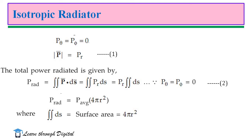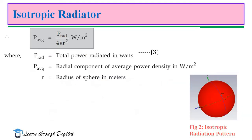That means P-theta and P-phi are zero, and the magnitude of the Poynting vector is equal to P-r. The total power radiated is given by P-rad equal to the surface integration of P-vector dot dS-vector. Surface integral is nothing but double integral, so double integral of P-r dS. The dS is the surface area of the sphere, which is 4πr². Therefore, P-rad is equal to P-average times 4πr², where 4πr² is the surface area. So, P-average is P-rad divided by 4πr² watts per meter square.